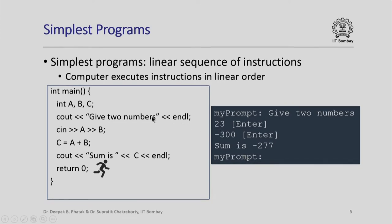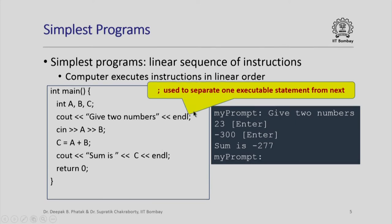This is exactly how a computer executes instructions in sequence as they are specified in the program. Note also that the semicolon is used to separate one executable statement from the next. You could put two executable statements on the same line — as long as you put a semicolon between them, the statement to the left of the semicolon will be executed first and then the statement to the right.